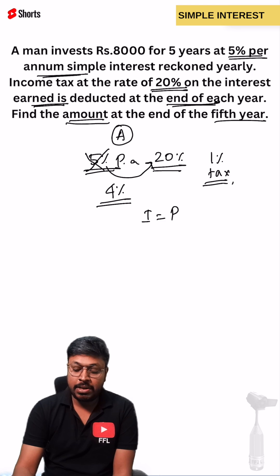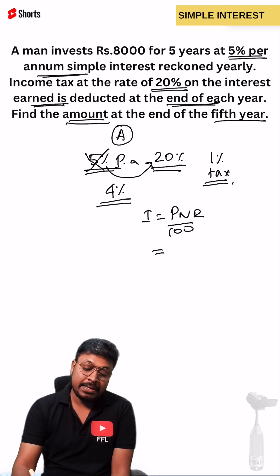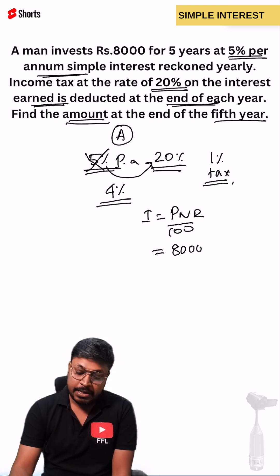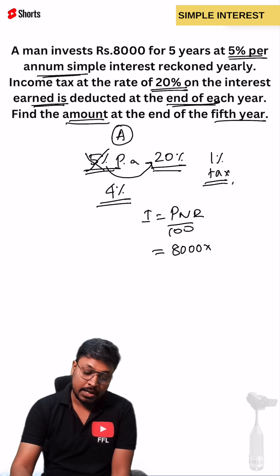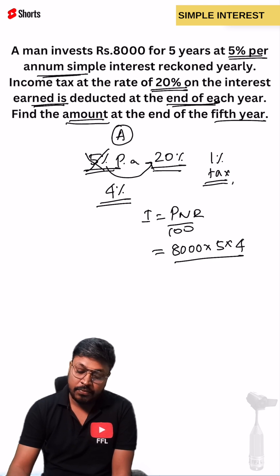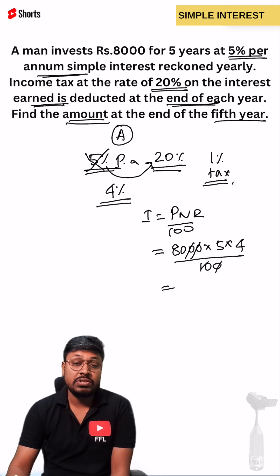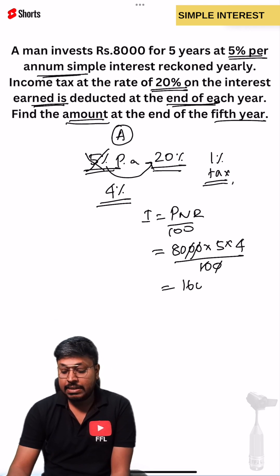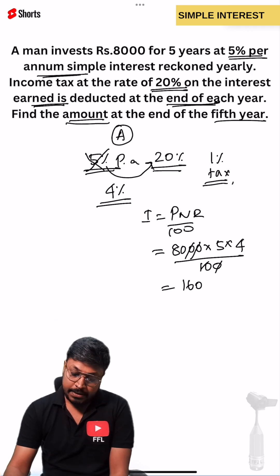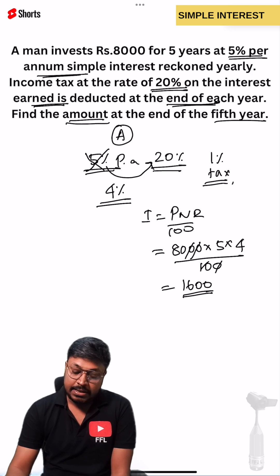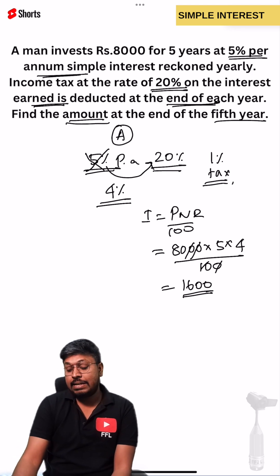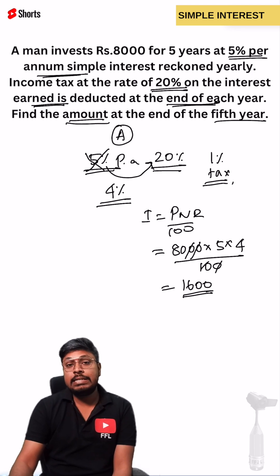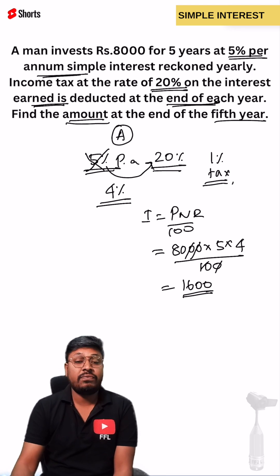The simple interest formula is PNR divided by 100. Principal is 8,000, number of years is 5, and the rate of interest is 4%. So 8,000 × 5 × 4 divided by 100. Cancelling, 5 × 4 = 20, and 8,000 × 20 / 100 = 1,600. So 1,600 is the interest earned by the person over 5 years.